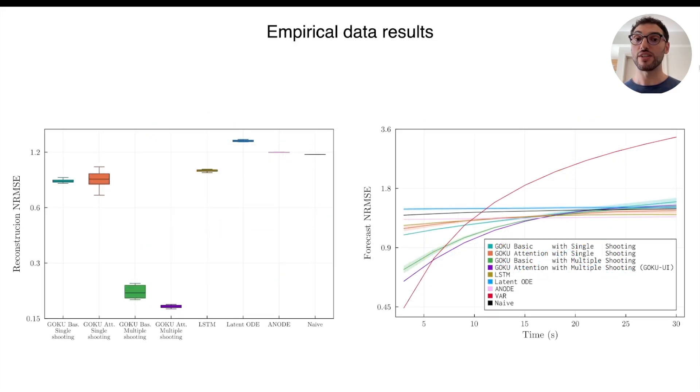Now let's see the results for the empirical datasets. As before, to the left we have the reconstruction error, and to the right the forecast error. In this case, we can observe that the addition of the attention mechanism didn't significantly improve the performance with respect to the plain GokuNet. However, multiple shooting made a big difference, with Goku UI achieving a five-fold decrease in reconstruction error compared to the plain GokuNet.